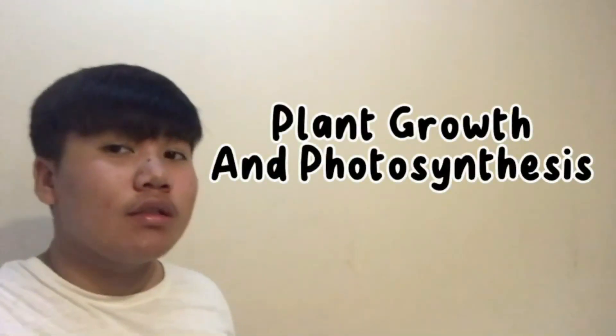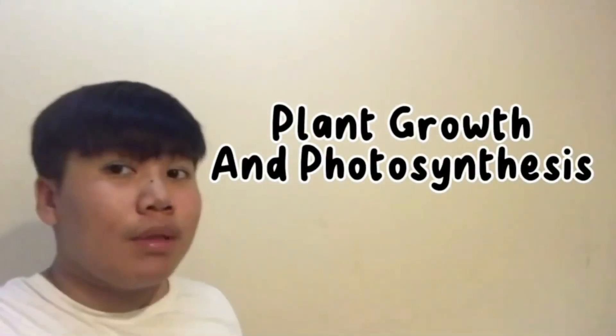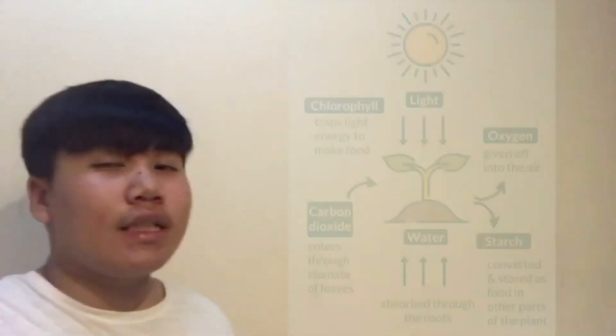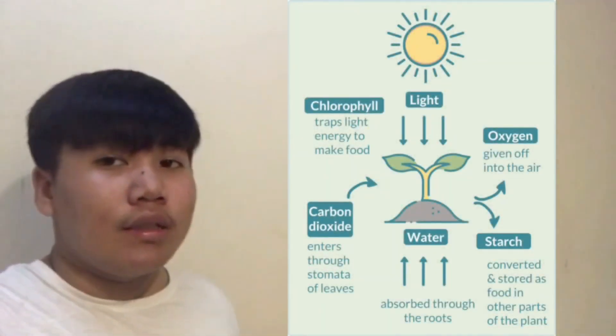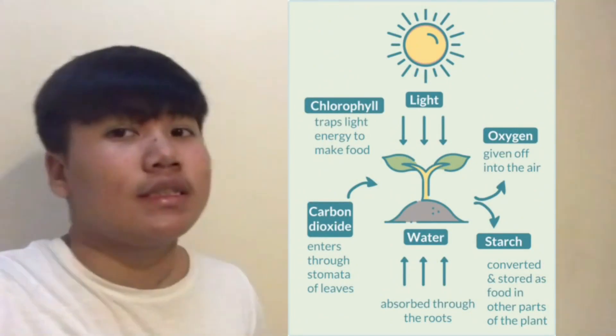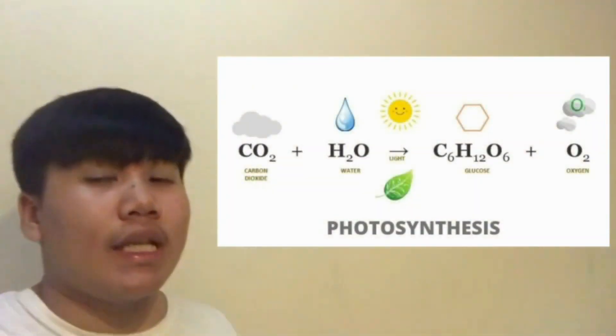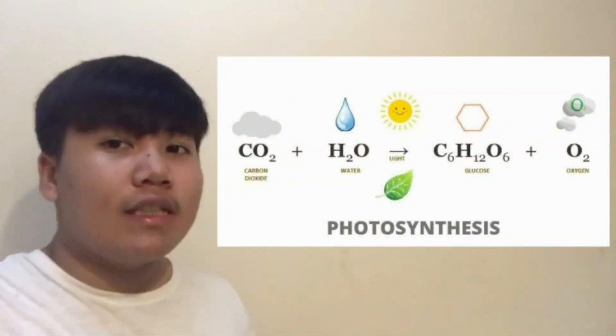To begin, let's talk about the foundation of plant growth. Plants as self-sustaining organisms possess a unique metabolic ability known as photosynthesis. Through this process, plants harness the energy of light particles called photons to convert carbon dioxide and water into glucose and oxygen, facilitating their growth and energy needs.